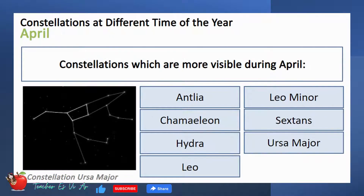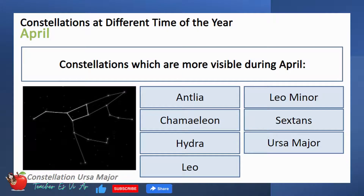On the other hand, constellations that are more visible during April are Antlia, Chameleon, Hydra, Leo, Leo Minor, Sextans, and Ursa Major.